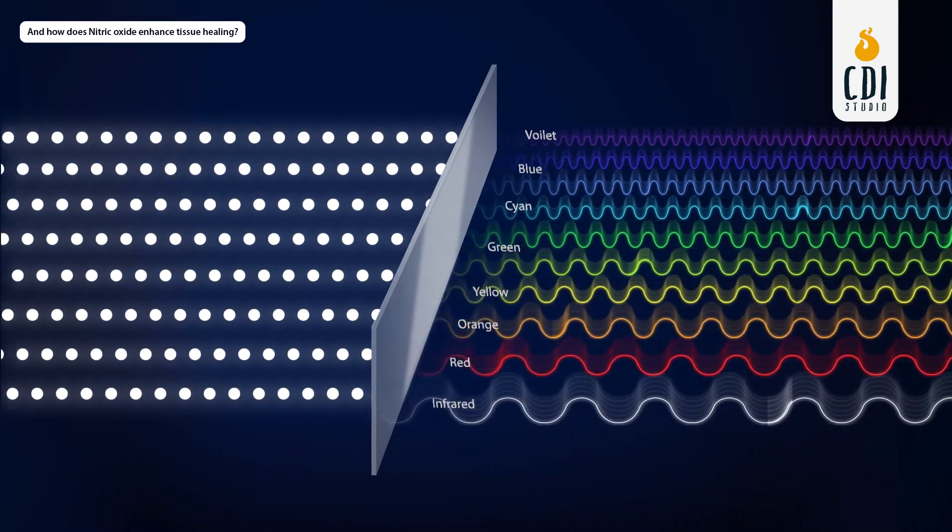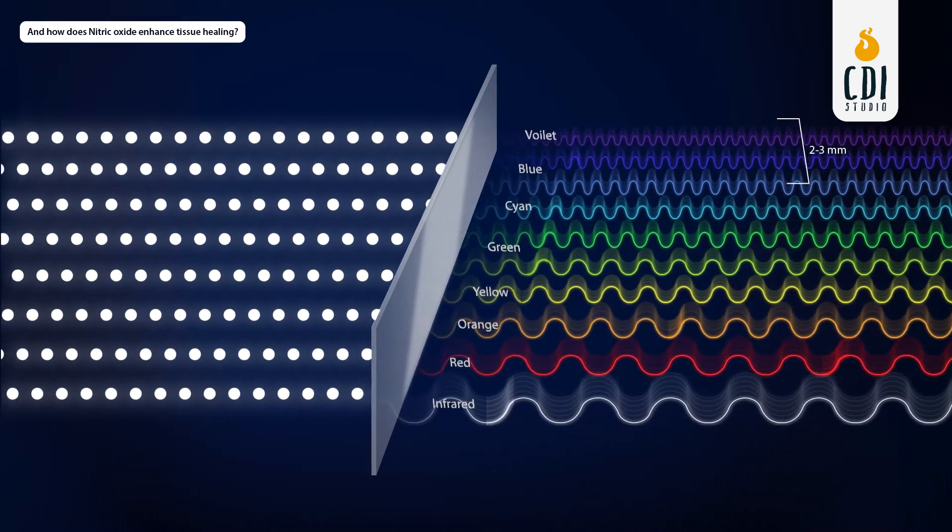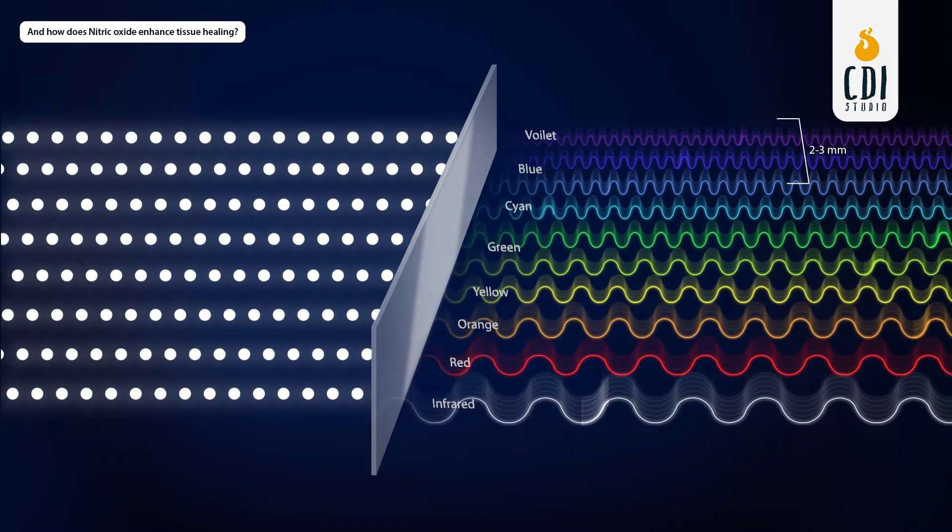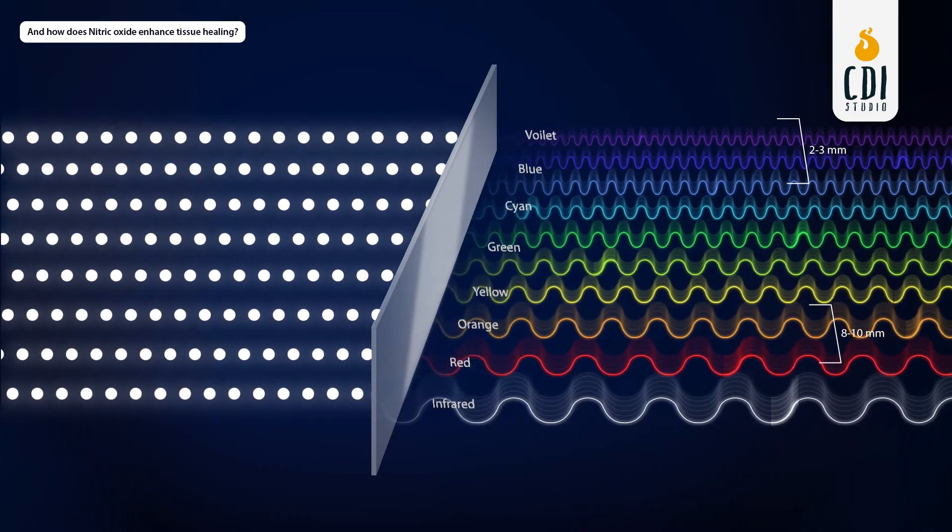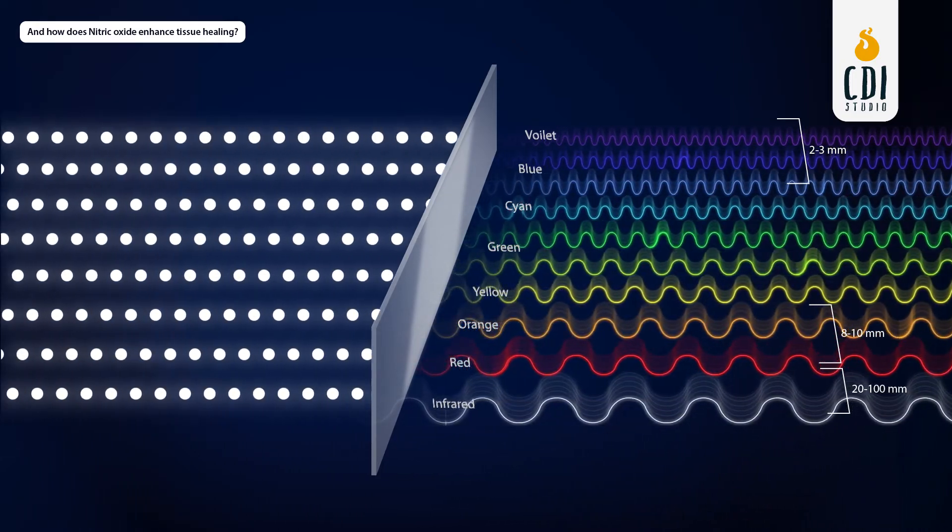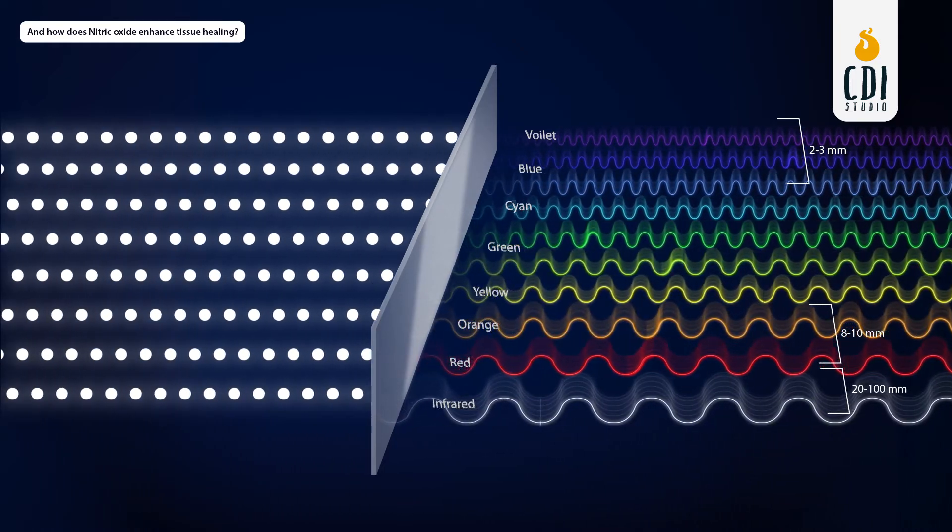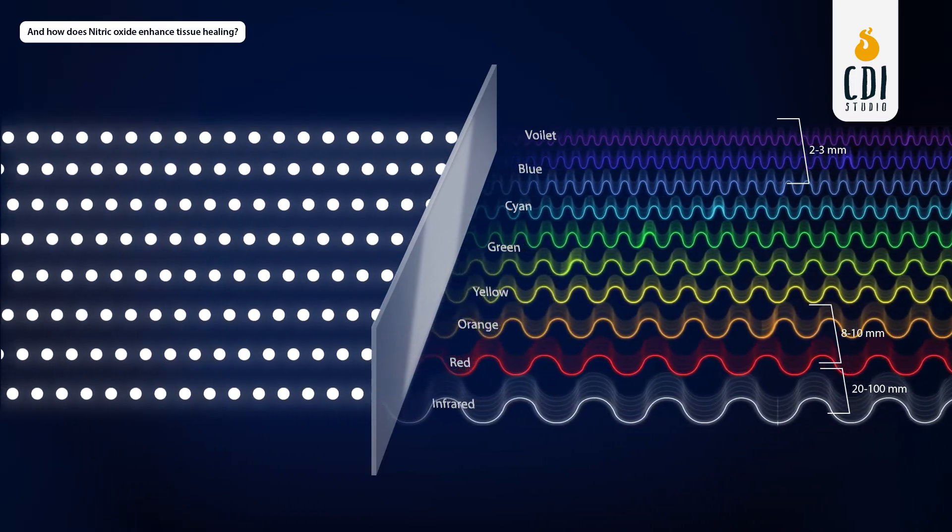Light near the blue end of the spectrum penetrates about 2 to 3 millimeters. Light at the red end of the spectrum penetrates about 8 to 10 millimeters. And near-infrared light penetrates about 20 to 100 millimeters. Near-infrared light is more energetic than visible light, less resistant to reflection and absorption, and therefore penetrates soft tissue to a deeper level.